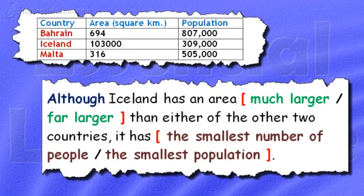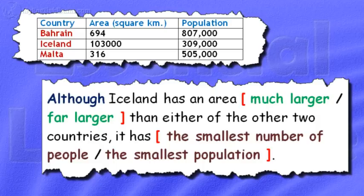Although Iceland has an area far larger than either of the other two countries, it has the smallest number of people.